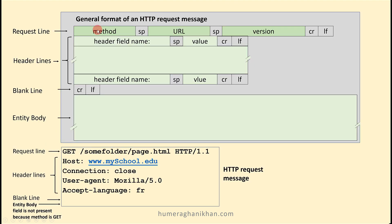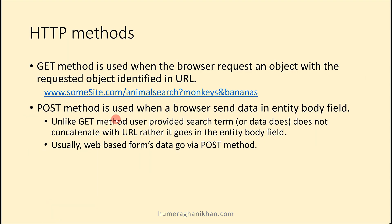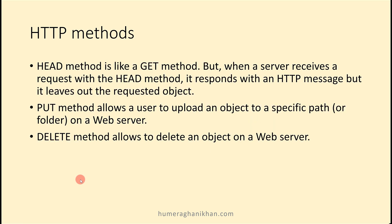The POST method is used when a browser sends data in the entity body field. With the POST method, the data is sent in the entity body field instead of the URL. For example, when filling out a web-based form, the data is not sent as part of the URL but rather goes in the entity body field.